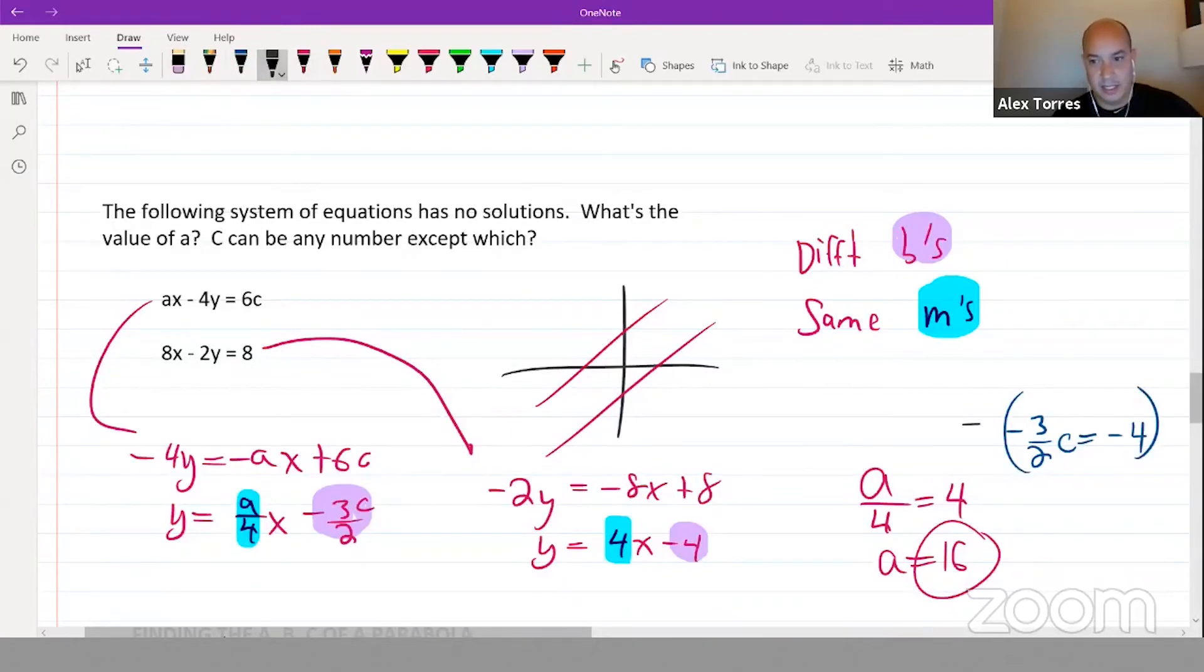We get c equals 8 over 3. Remember we were judging what was not going to be allowed, so this cannot be the case. Now we know c cannot equal 8 over 3, so c can be any number except 8 over 3, and the value of a is 16.